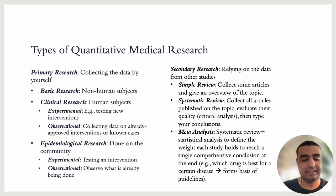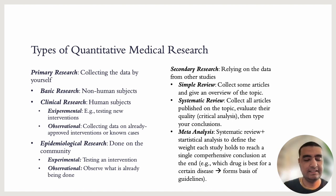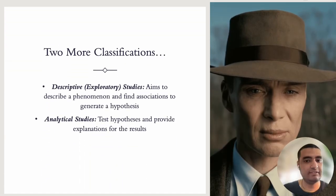Experimental epidemiological research means you are testing a widely tested intervention on the community. Observational means you observe what is already done or what is already there in the community — for example, a cross-sectional study. Then we have secondary research, where we take data from studies that are already made and try to formulate conclusions. Because every single study has a conclusion, we can gather a group of studies about the same topic and formulate a stronger conclusion. That's why systematic reviews and meta-analyses are the highest type of study in the evidence hierarchy.